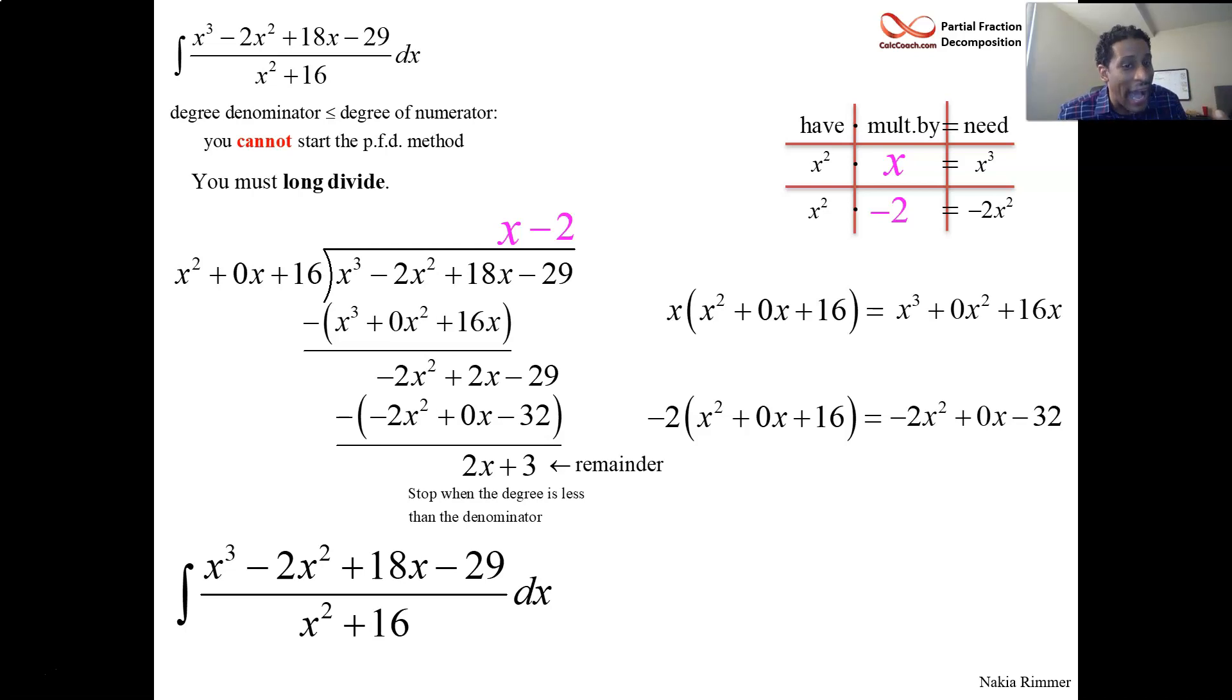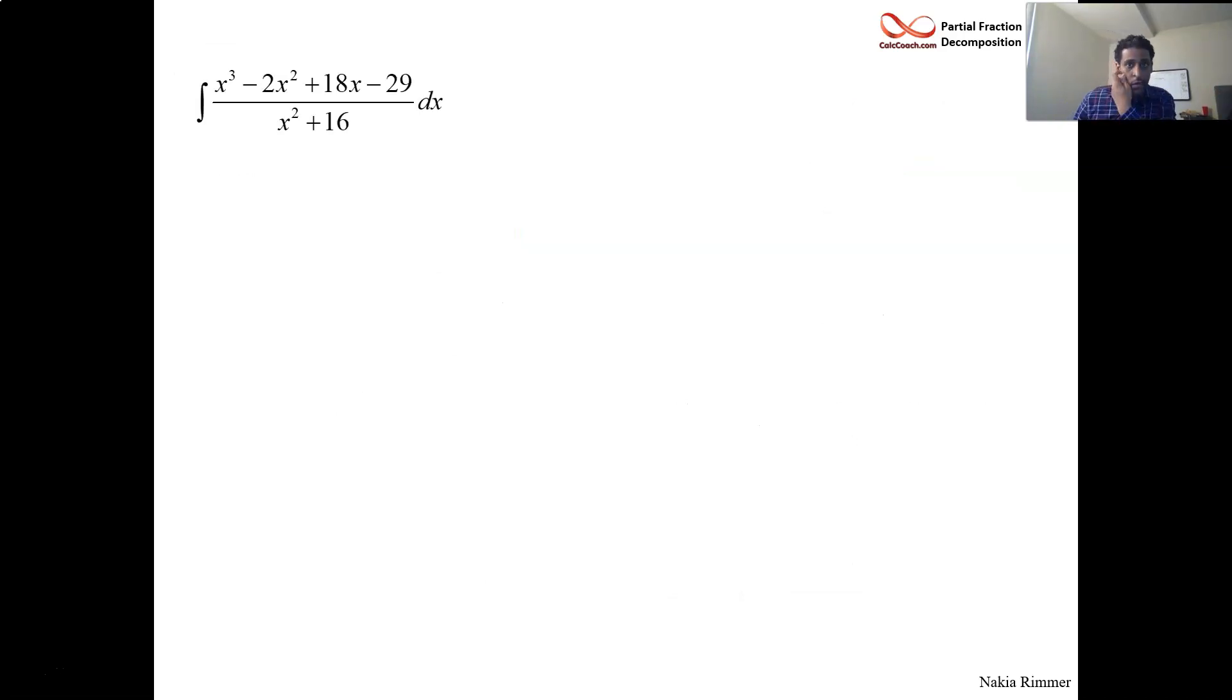And so we have the x minus 2, that's like the whole number part, and then plus the remainder on top of your divisor. And it's just another way of writing your function. The integral on the original function is the same integral on this altered version of it. We can integrate x all day long. We can integrate minus 2 all day long. So then the issue then comes, what about this fraction that we now have?